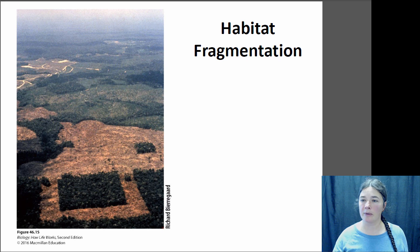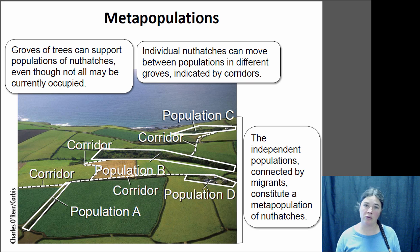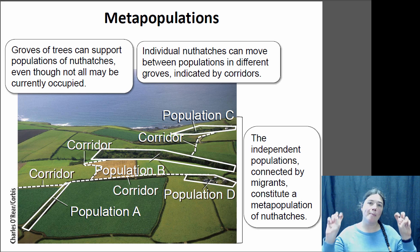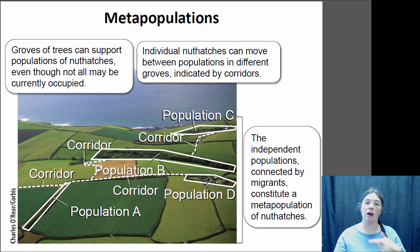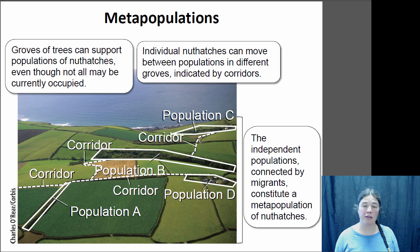One thing you can look at with fragmentation is how easy it is for animals to move back and forth between populations. If you have ways for animals or plants to move between populations, that increases immigration rates and can keep diversity in these fragments higher. That shifts the equilibrium species number over. One way to do that is to create metapopulations — interconnected populations with lots of movement of individuals between them — by having habitat corridors between fragments: a strip of grassland or natural habitat between fields that allows individuals to move through and maintain populations so they don't go extinct.